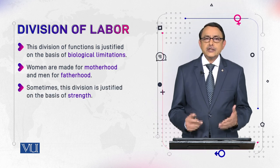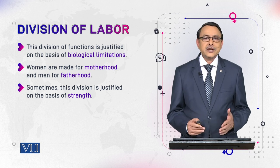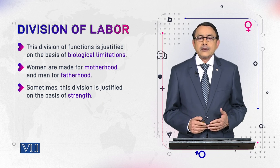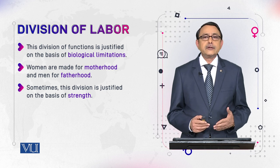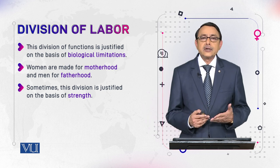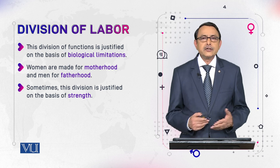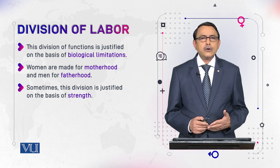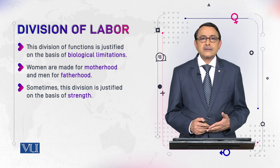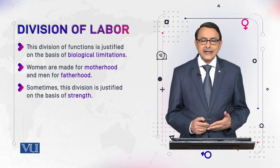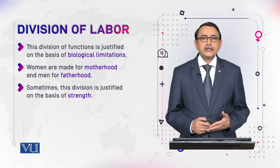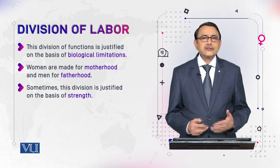Sometimes this division of work based on sex is justified on the basis of strength. For example, men can work in woodworking labs, metal labs, the military, and as engineers — all these hard jobs are seen as performable by men. Women, being considered delicate with lesser strength, are thought suitable for selling flowers, working as teachers, clerks, or salespersons — all jobs where physical strength is not required.